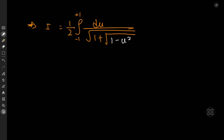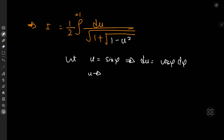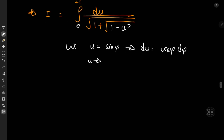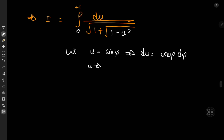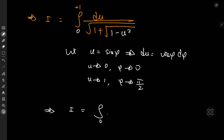This integral is easier to work with — we're rid of trigonometric functions, but still have a nested square root. The structure motivates a trigonometric substitution: let u = sin(φ), so du = cos(φ) dφ. Also, the integrand is an even function of u, so we integrate from 0 to 1 and double the result, eliminating the 1/2 factor. For u from 0 to 1, φ goes from 0 to π/2.